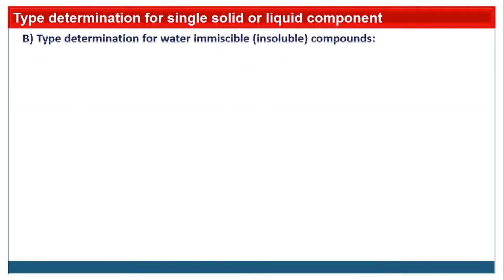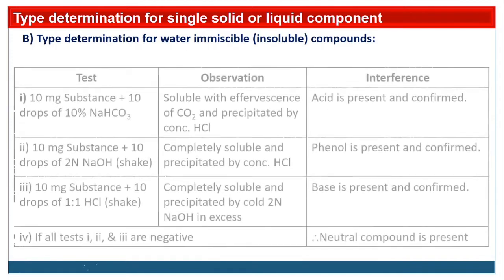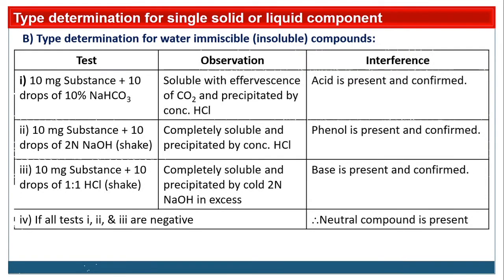The second table is for type determination of water-immiscible or insoluble compounds. There are three sequential tests: test for acid, test for phenol, and test for base. For the acid test, take 10 mg of substance and add 10 drops of 10% NaHCO₃. This is the reagent for the acid test. The observation should be soluble with effervescence of CO₂ — we can see bubbles of CO₂ gas and the substance quantity decreases. If soluble with effervescence of CO₂, then acid may be present.